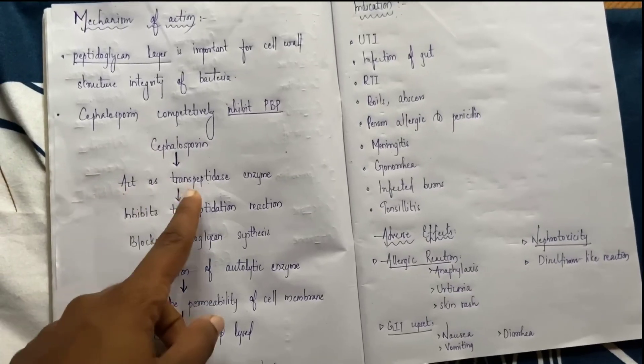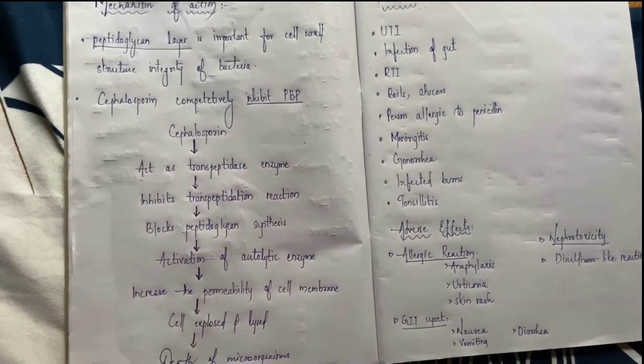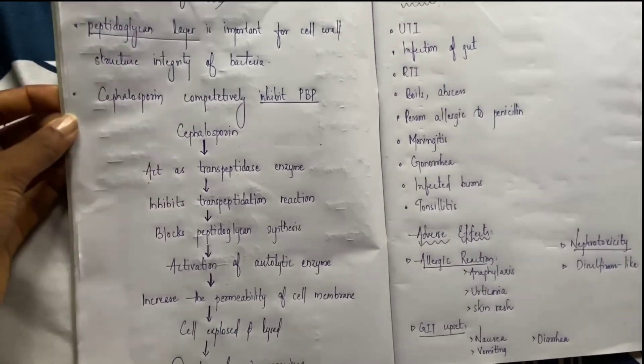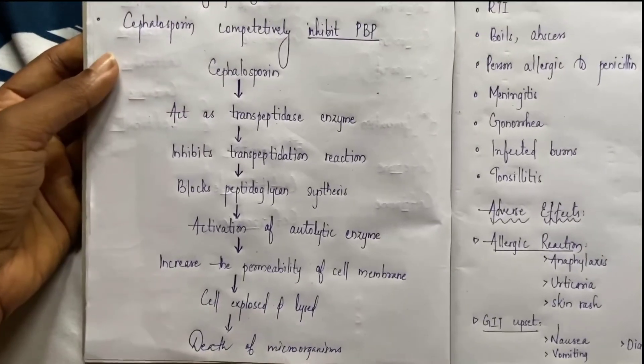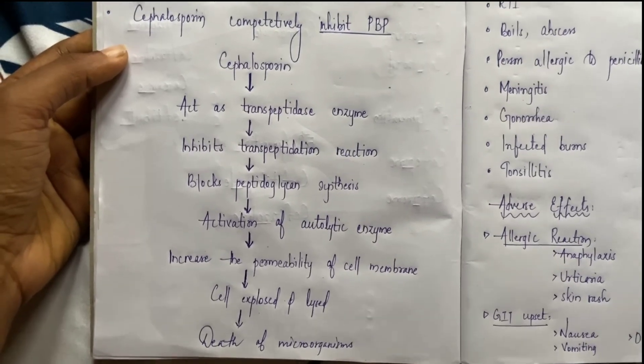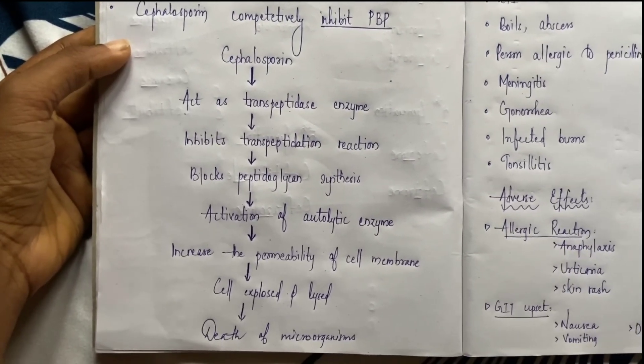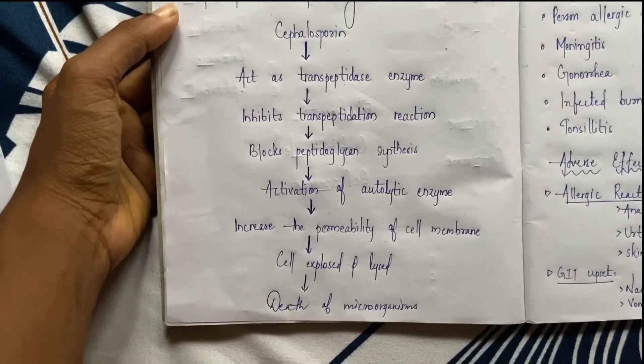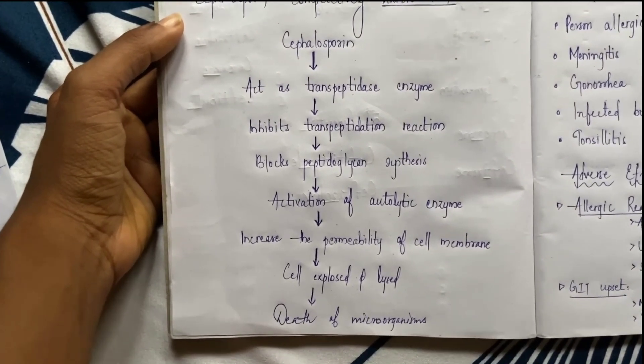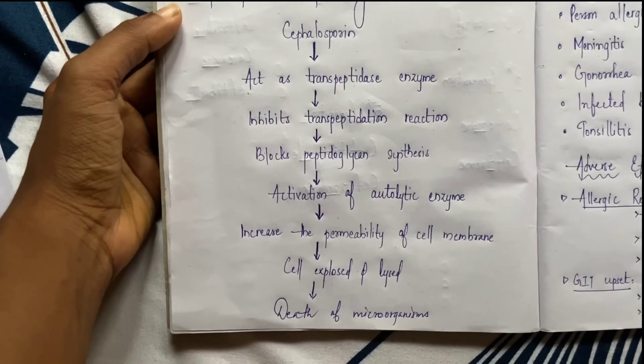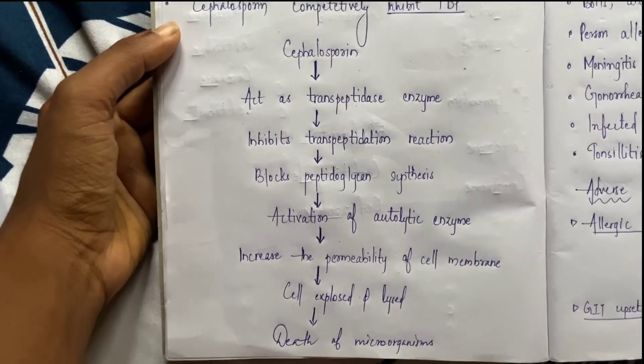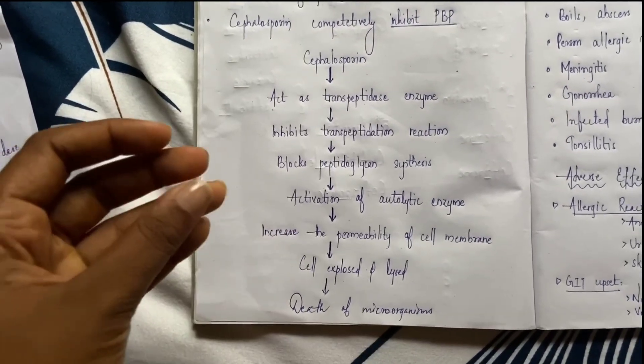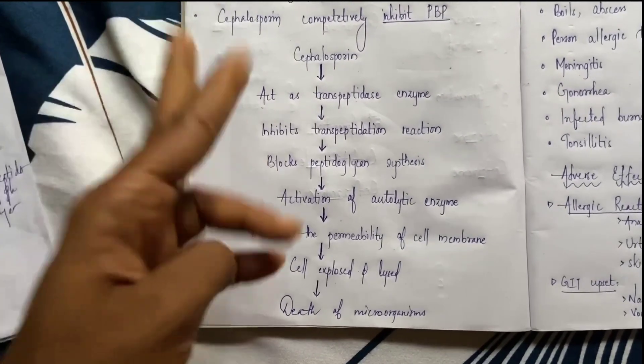Let's look at the flowchart. Cephalosporin acts on the transpeptidase enzyme. This transpeptidase enzyme forms the peptidoglycan layer. When the transpeptidase reaction is inhibited, the peptidoglycan layer, that is the cell wall layer, is not formed properly. Then autolytic enzymes, which means lysis or breaking down enzymes, become activated.